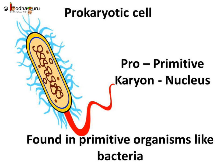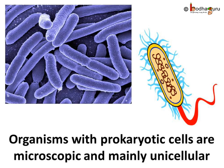But bacteria don't have a nucleus with a nuclear membrane. Their genetic materials are open in the cytoplasm. This kind of cell is called a prokaryotic cell. 'Pro' means primitive and, as we know, 'karyon' means nucleus, so organisms with prokaryotic cells are primitive organisms. Organisms with prokaryotic cells are mostly microscopic, which means we need a microscope to see them, as most of them are made of one cell only.